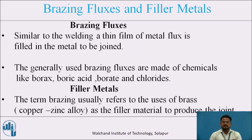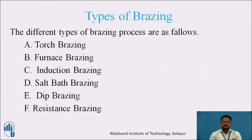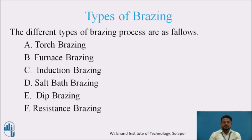Coming to the types of brazing. Different types of brazing process include torch brazing, furnace brazing, induction brazing, salt bath brazing, dip brazing, and resistance brazing. Torch brazing is the most commonly used method, especially where the process is jobbing in nature and the assembly is very large. Heat is produced by burning oxyacetylene gas, which gives a high temperature and is hence most suitable for brazing.